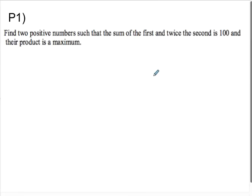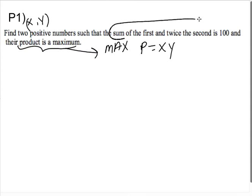All right, go ahead and try P1. Two positive numbers such that the sum of the first and twice the second is 100 and their product is a maximum. So the thing you're trying to maximize, you want the max product. I'm going to call the numbers X and Y. So you want to maximize P equals X times Y.